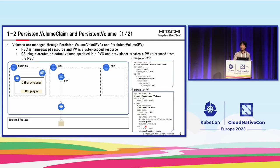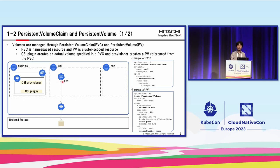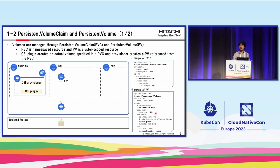I will explain storage-related features from a namespace viewpoint. Let's begin with PVC and PV. In Kubernetes, volumes are managed through Persistent Volume Claim (PVC) and Persistent Volume (PV). PVC is a namespaced resource that users create, and PV is a cluster-scoped resource that admins or provisioners create and manage. A user creates a PVC by specifying their access mode, volume size, and so on. Then a corresponding PV is created and bound to the PVC, so that the user can use the volume through the PVC.